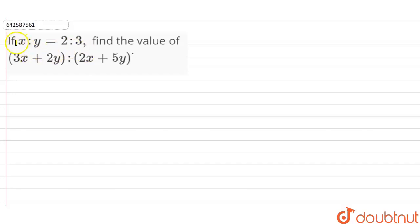Hi students, our question is: if x ratio y is equal to 2 ratio 3, find the value of 3x plus 2y is to 2x plus 5y.